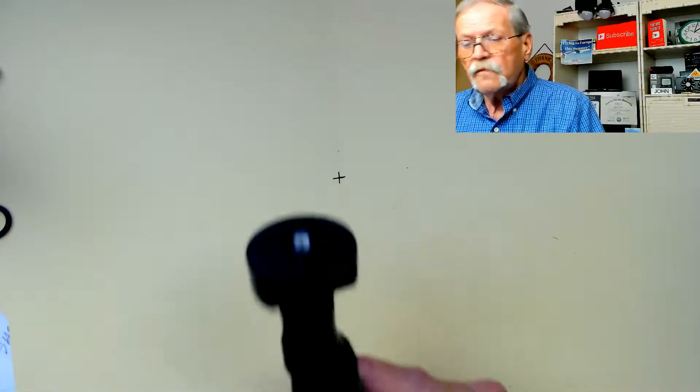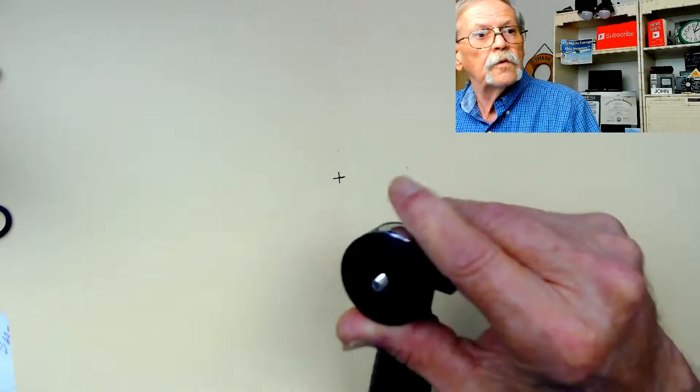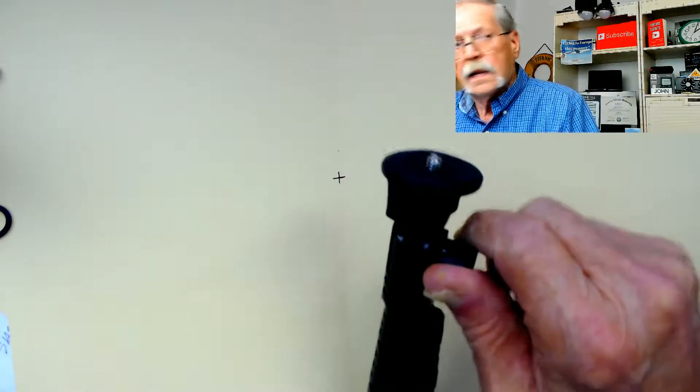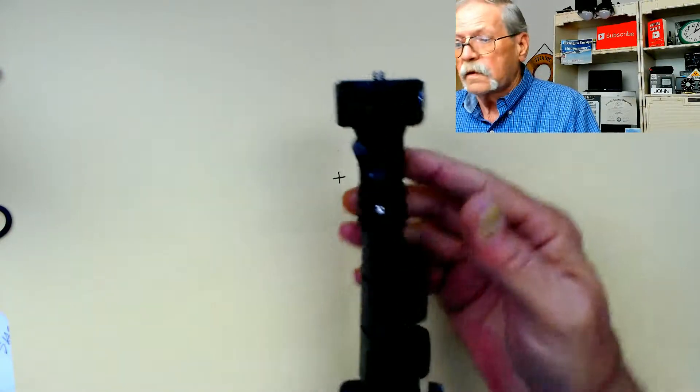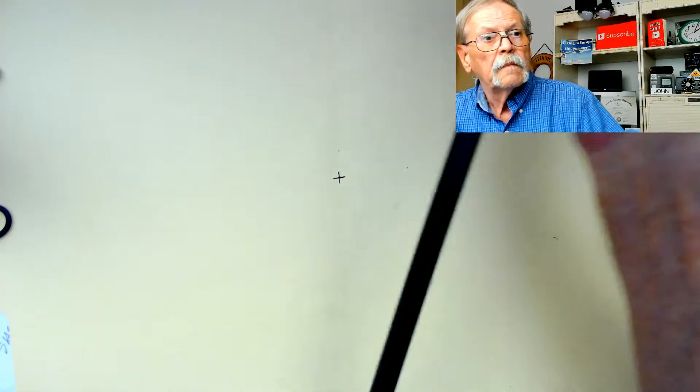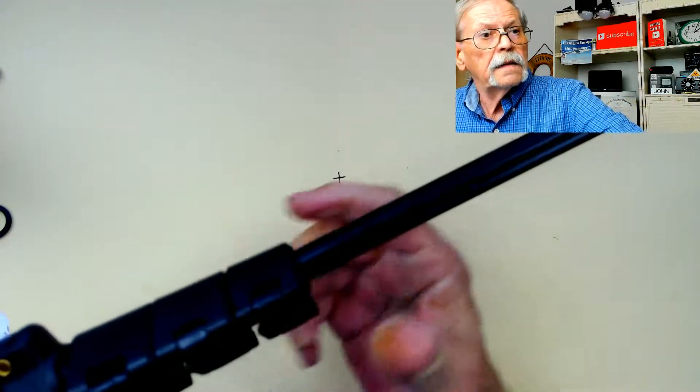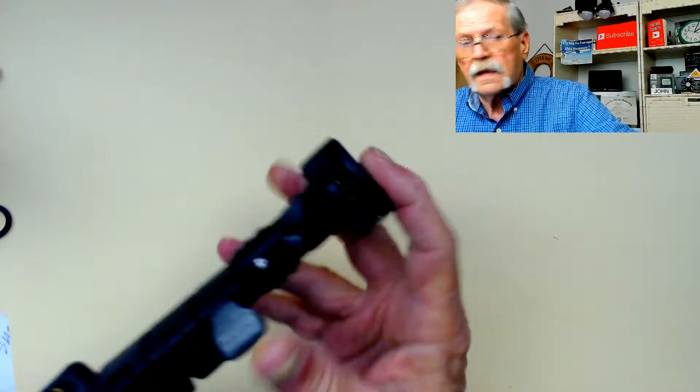Now the tripod itself has a locking mechanism here that will let you move the ball head. Lock it down. The leg releases are just one step, pull them out and then lock it. I'll collapse this back again.